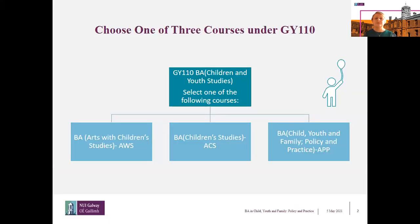It's important to remember that this program is one of three offered in relation to the CAO code GY110. GY110 is a thematic area of children and youth studies, but within it are three separate programs. The program we're going to be talking about specifically today is the BA in Child, Youth and Family Policy and Practice, so it's important to identify which of the three programs you're going to select in your application.